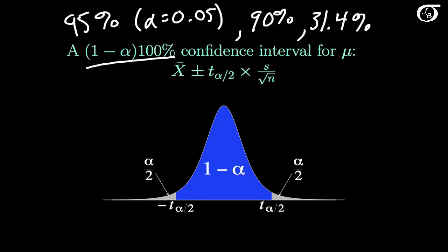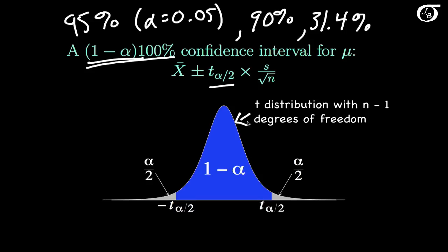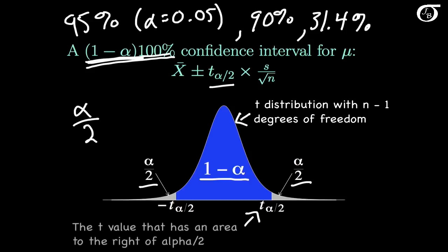Our choice of confidence level is tied in with the t value that we use, and this comes from a t distribution with n minus 1 degrees of freedom, as drawn here. If we want the confidence level to be 1 minus alpha times 100%, then we put an area of 1 minus alpha in the middle, and the remaining area alpha is split evenly into the two tails — an area of alpha over 2 in each tail. t sub alpha over 2 is notation for the t value with an area to the right of alpha over 2.